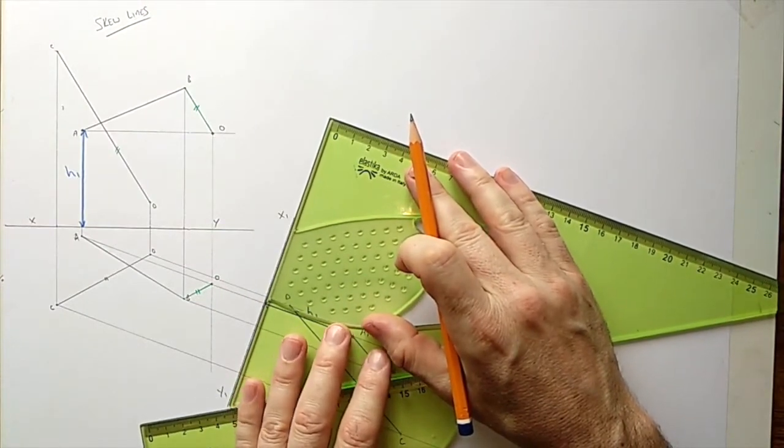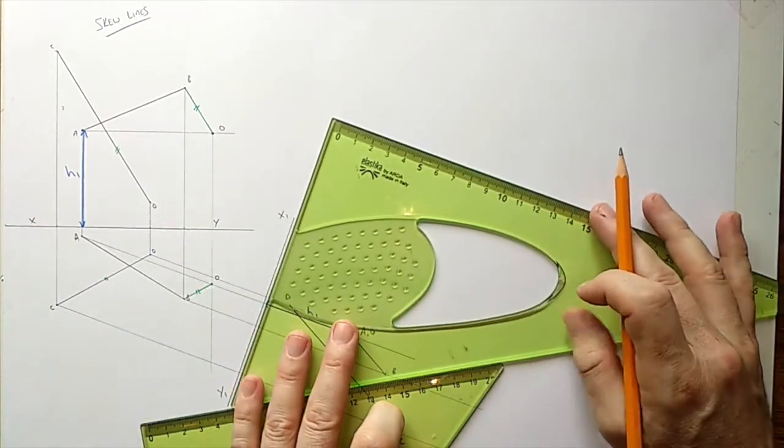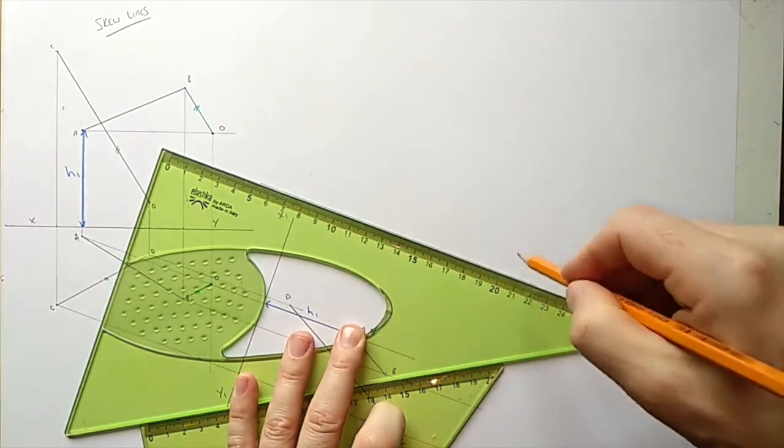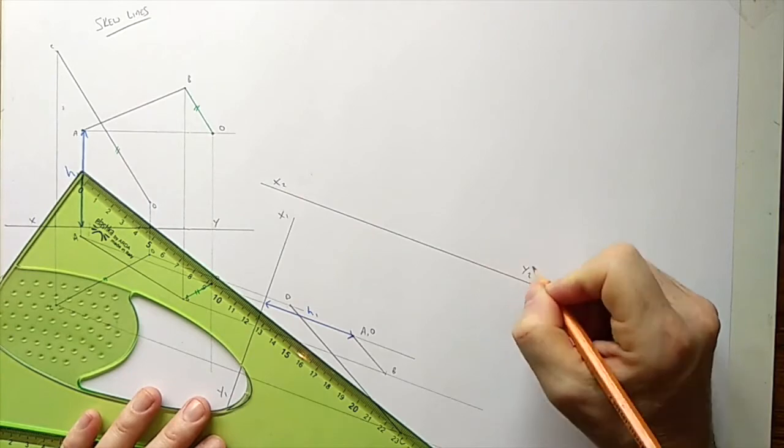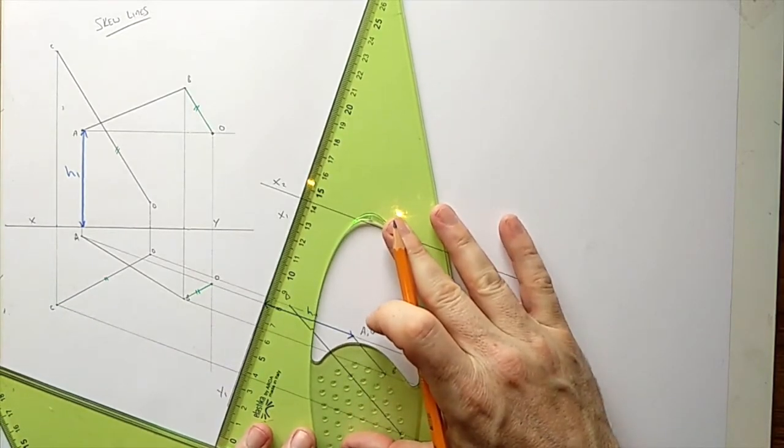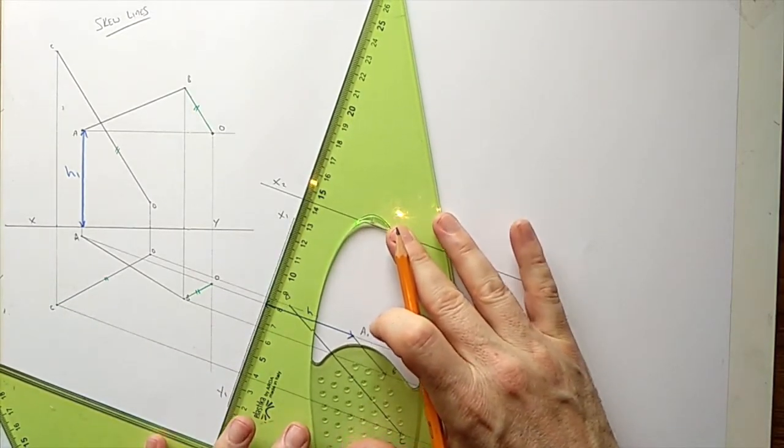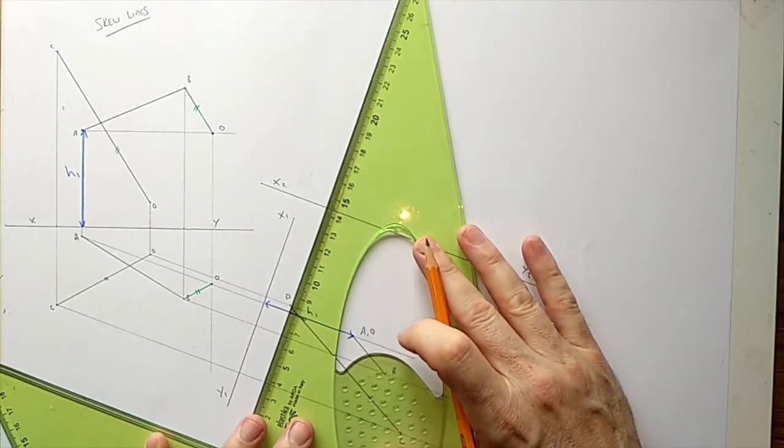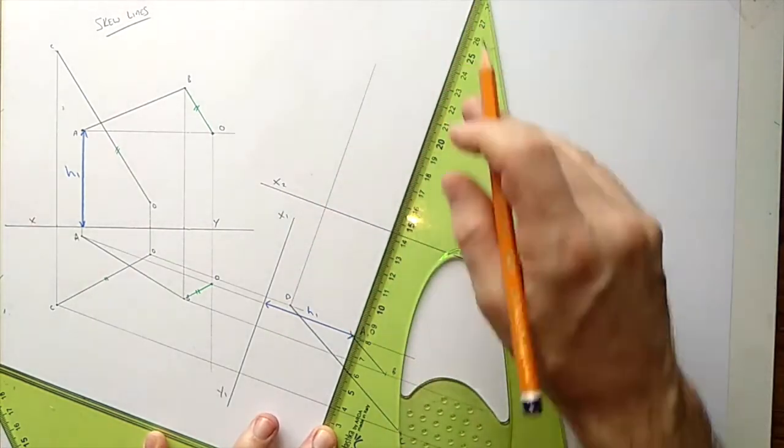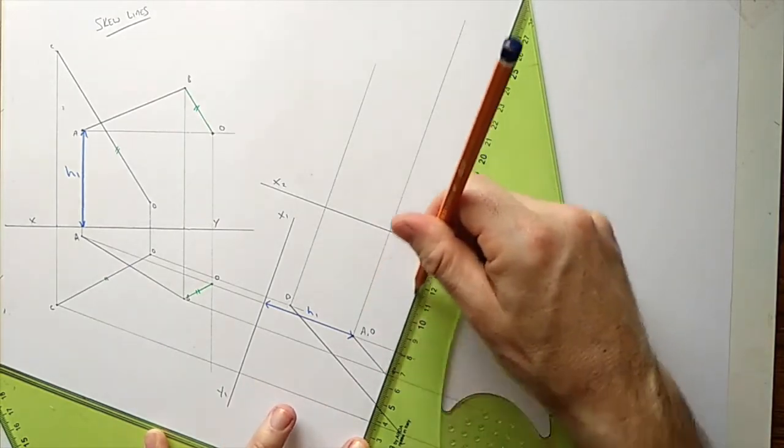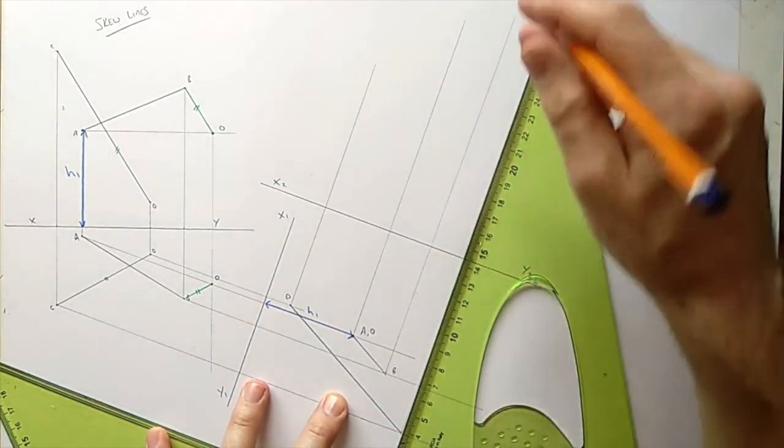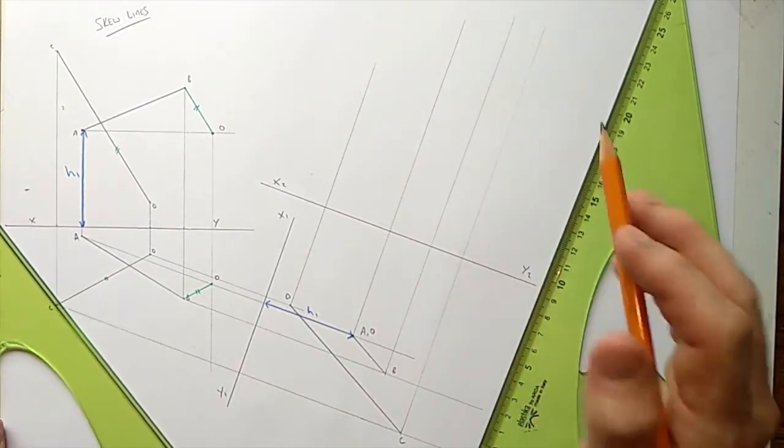So line that up there and I'm going to bring our X2Y2 fairly close just to try and keep you in camera. So this is perpendicular to X1Y1. Now we're looking along it so we're going to project a line parallel to X1Y1 for each of these points.